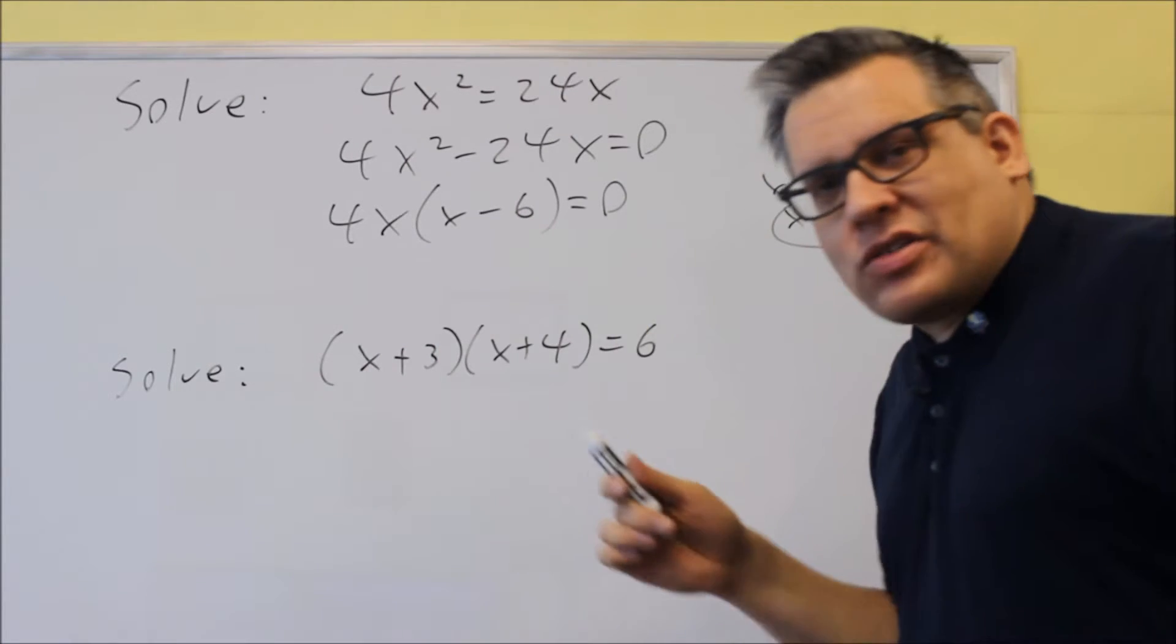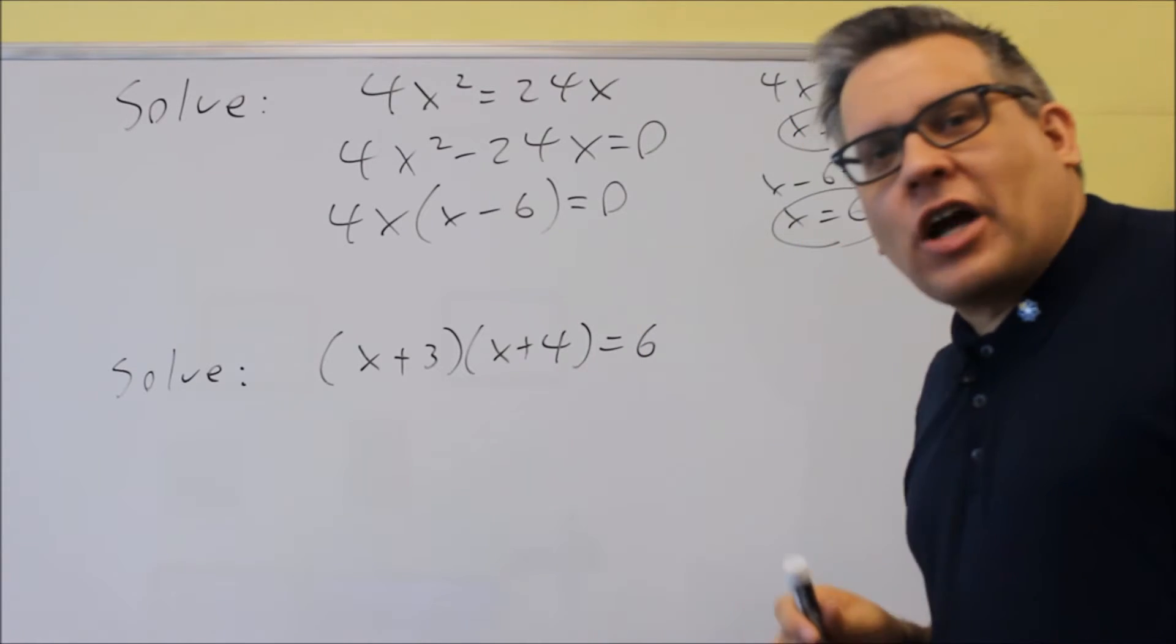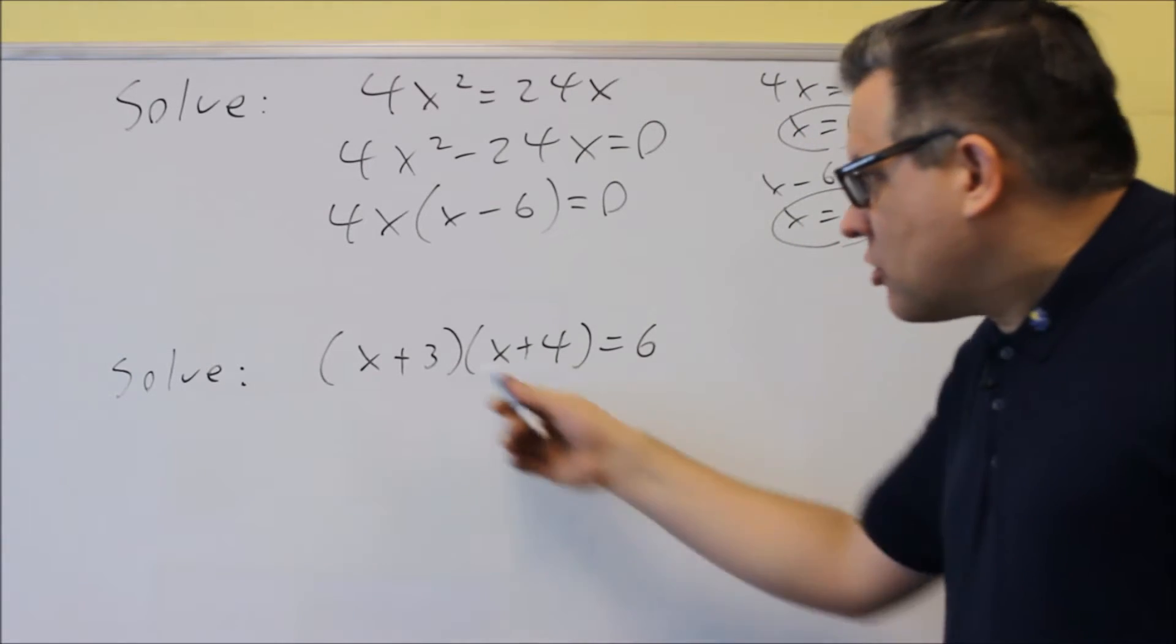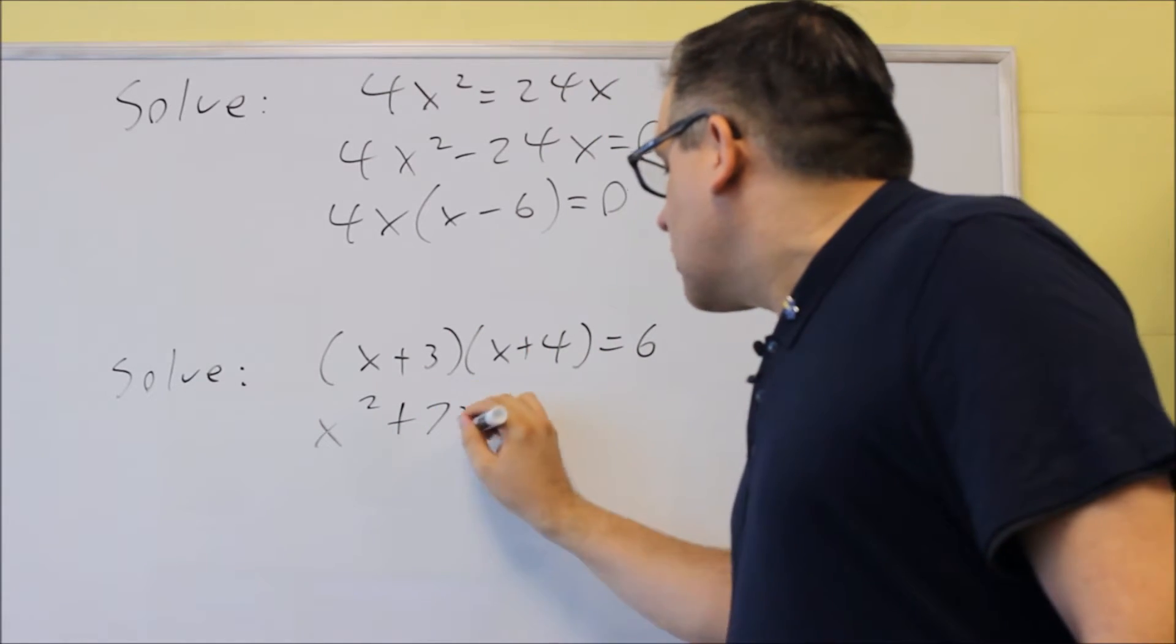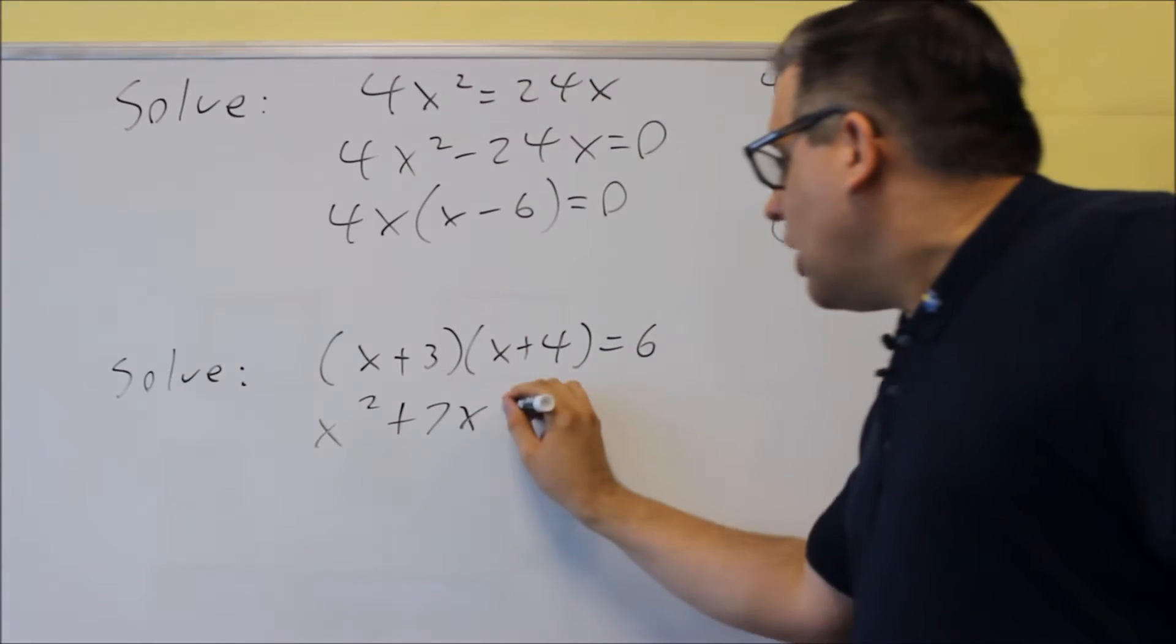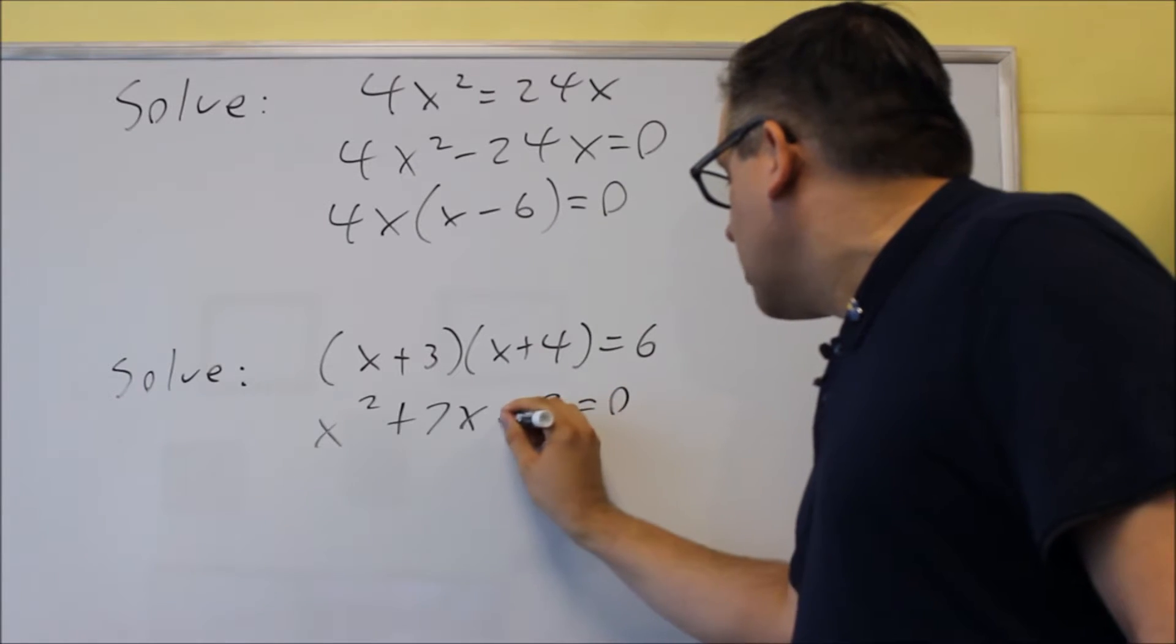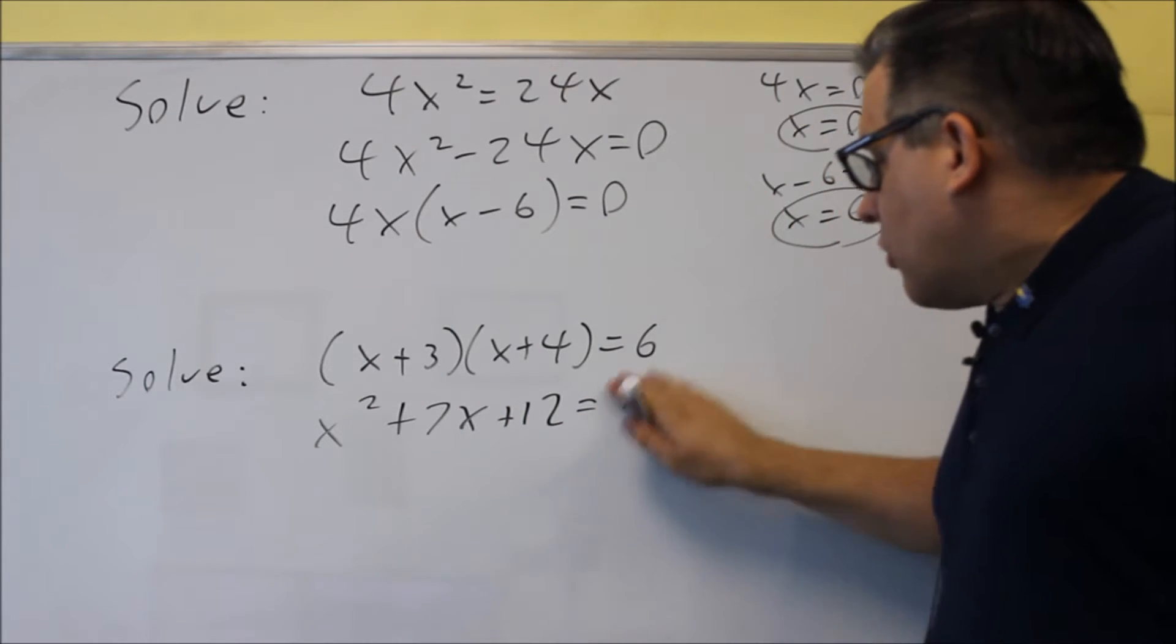We're going to multiply this out first, then subtract the six and get it all equal to zero. So we'll multiply this one out, we get x squared, and I have four x and three x, that's seven x for the middle terms, and then plus twelve, that equals six.